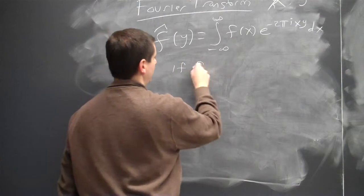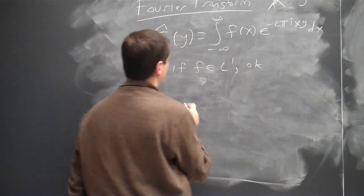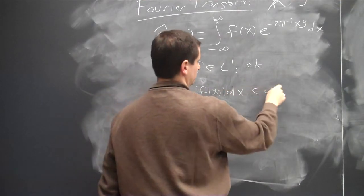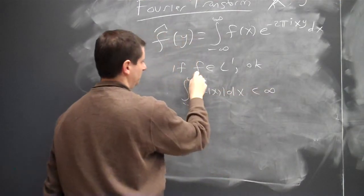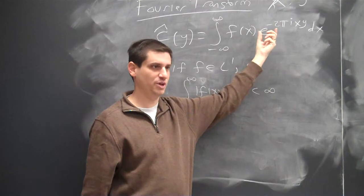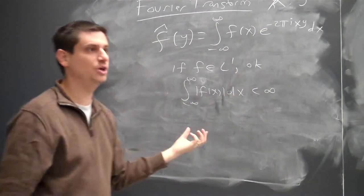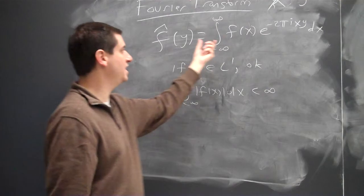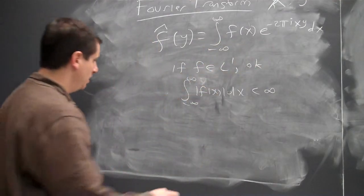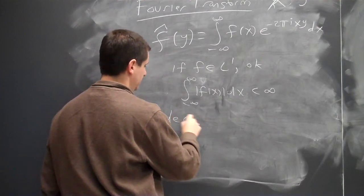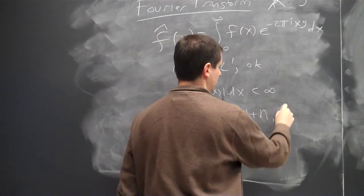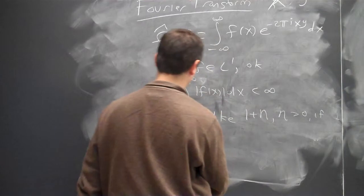And that means the integral of the absolute value of F of X, dX, is finite. And the reason this is enough is the absolute value of the integral is at most the integral of the absolute value. So if my function F is integrable, which means the integral of its absolute value is finite, then I'm okay. And F hat of Y exists.